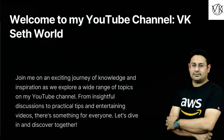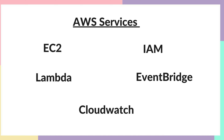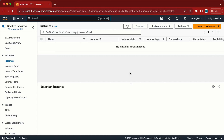Hi YouTube family, my name is Vicky and in today's video we are going to learn about CloudWatch rules, or rather how to configure the EventBridge rule — it's a new feature with AWS. We are going to create a rule that will trigger a Lambda function. For this demo we need a few services: IAM, EC2, Lambda, CloudWatch rules, and CloudTrail. By the end of the video you will learn how to trigger a Lambda function with a customized rule.